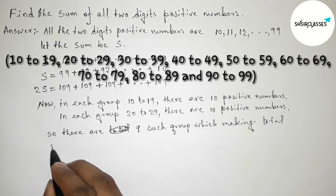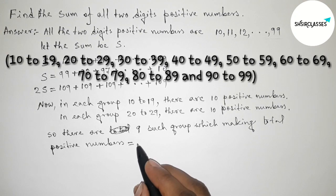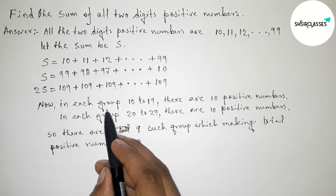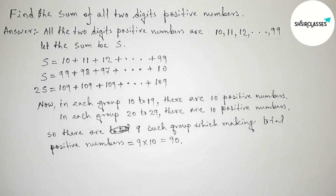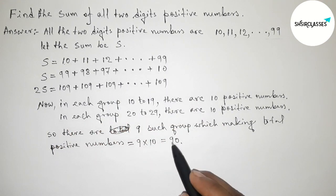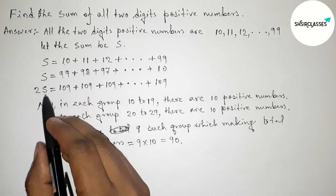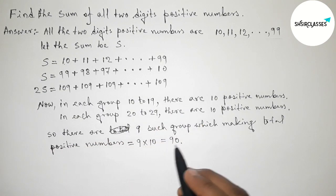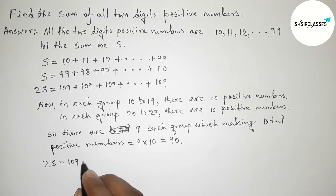There are 9 such groups and the total number of two-digit positive numbers equals 9 × 10 = 90. Since there are 90 pairs each summing to 109, we can write: 2S = 109 × 90.